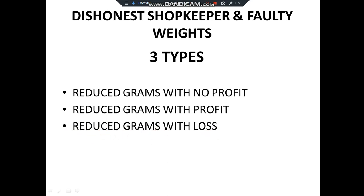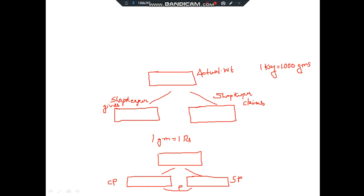Now I'll show you the best, simplest method to solve these questions using three boxes. Understand this concept very carefully so you can solve any kind of question. The first upper box indicates the actual weight — for example, if I want one kg of onion, that is 1000 grams, and that goes in the upper box. The lower left-hand side box indicates what the shopkeeper actually gives — if I ask for 1000 grams and he gives only 900, then 900 goes in the left-side box.